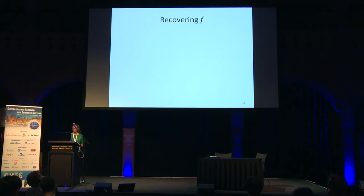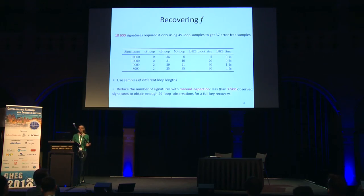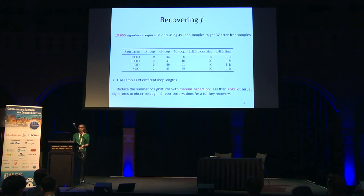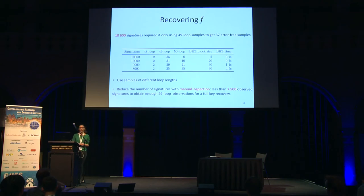In our experiments, it required approximately 8,000 signatures to recover the full key. Using trade-offs described in the paper — exploiting loops of different lengths and selecting signatures that are easier to process — along with some manual inspection, we reduced the required number to just under 7,500 signatures to recover the full key.